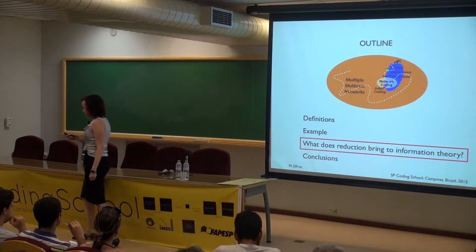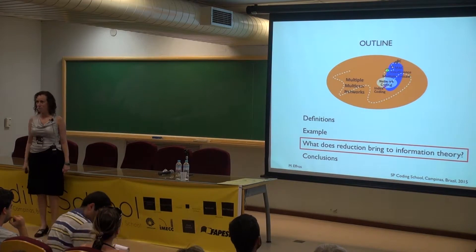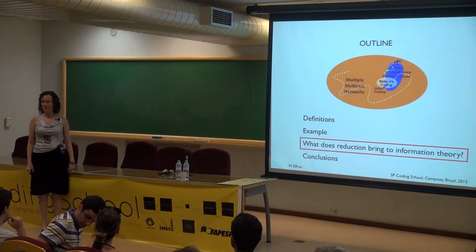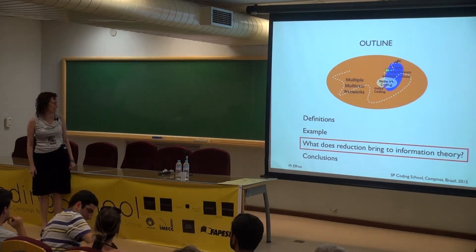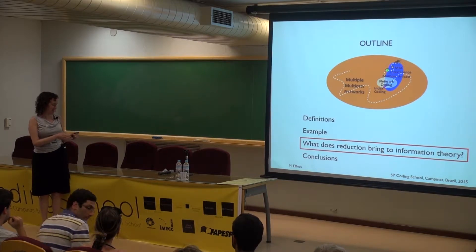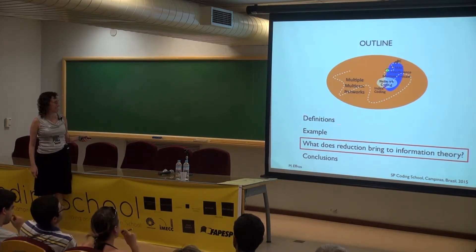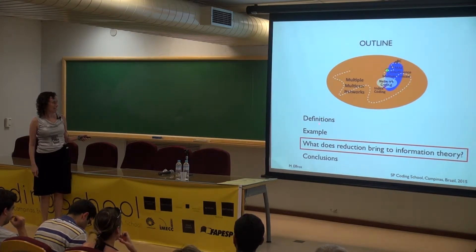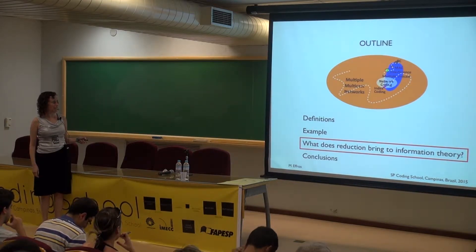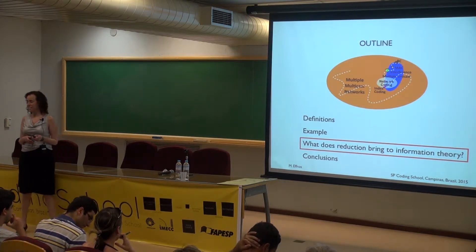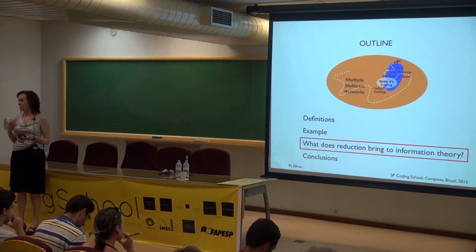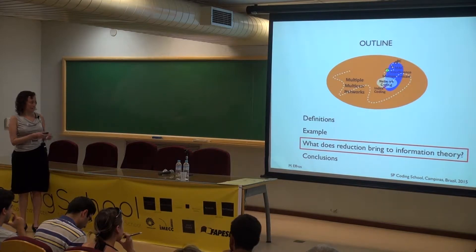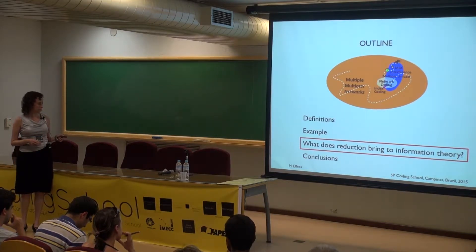You remember that yesterday we started talking about reduction, and I'm hoping you were all there because I wasn't planning on redefining things. What we did yesterday included coming up with some definitions — talking about definitions both for networks and what it means for a reduction argument — and then we spent some time on an example. Today I thought I'd talk about what kinds of benefits reduction arguments might bring to information theory, and then maybe we'll talk about some conclusions.